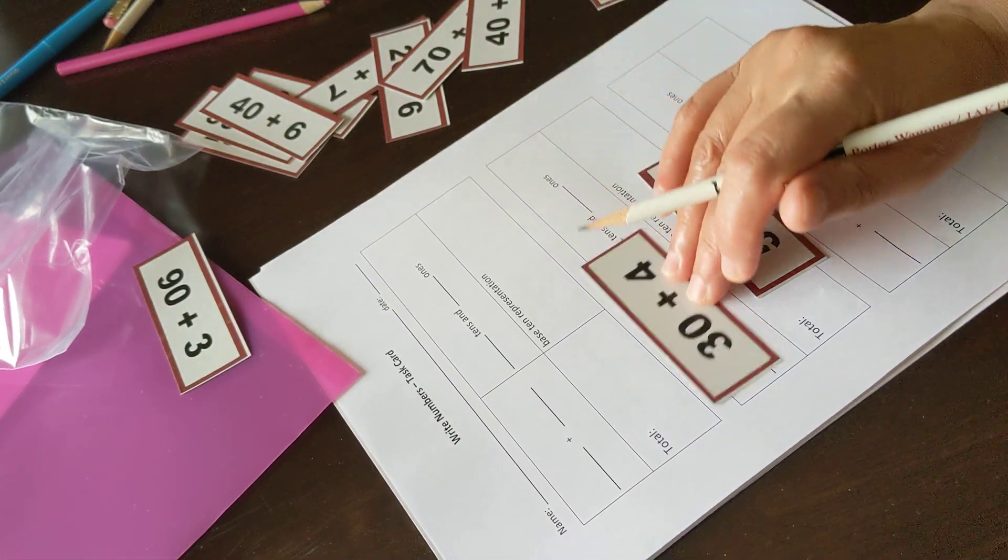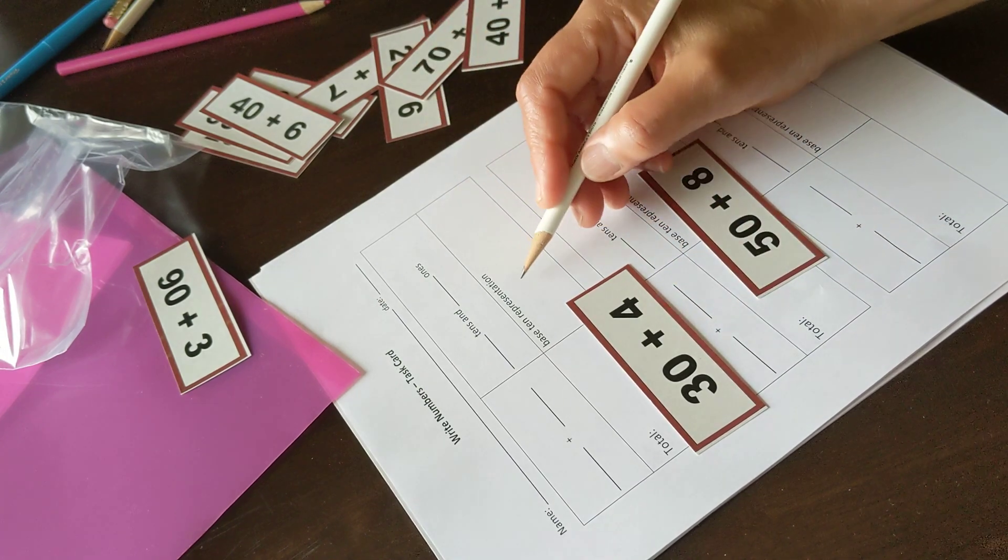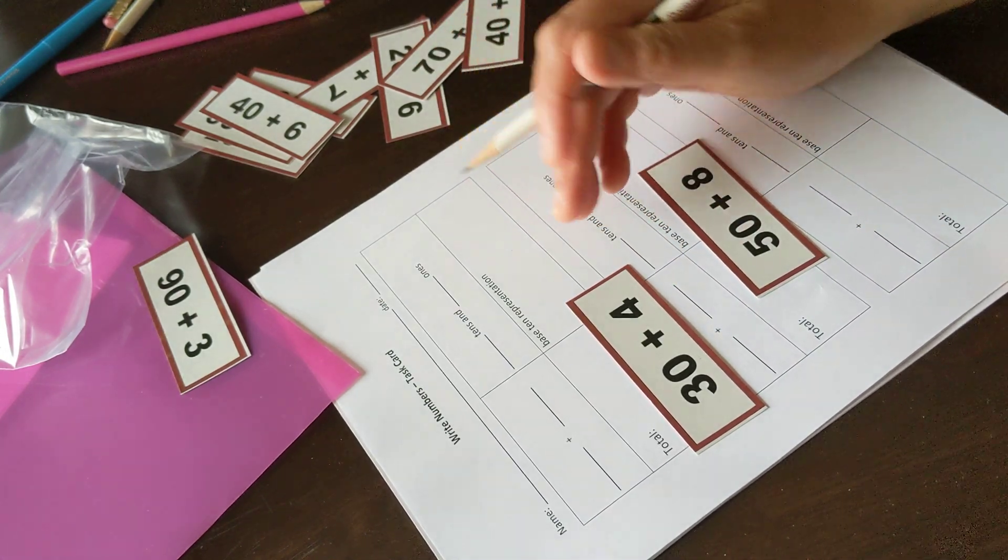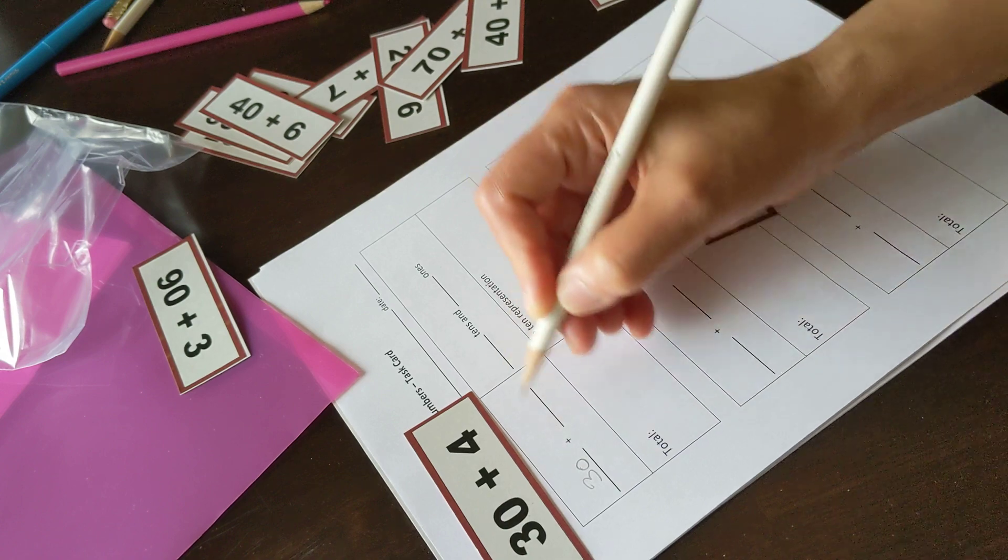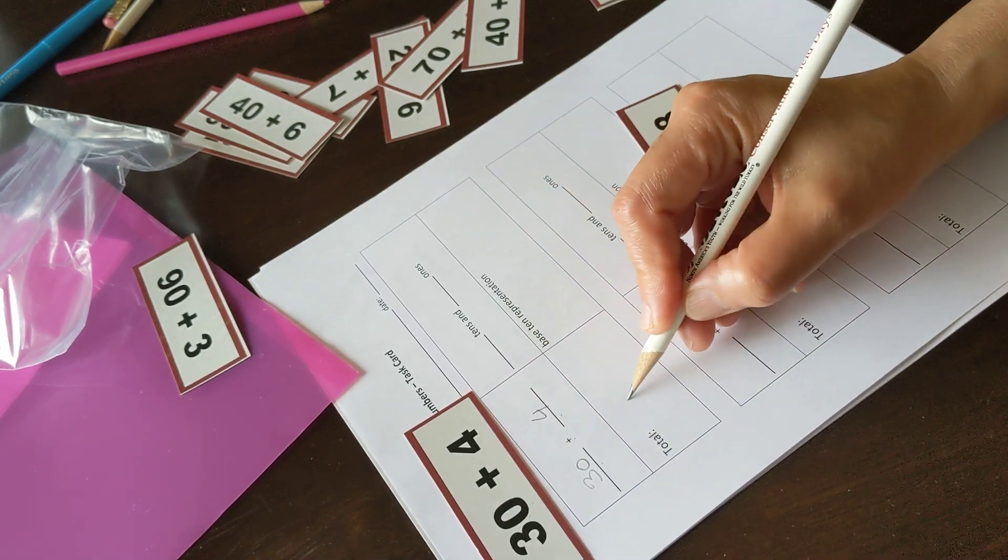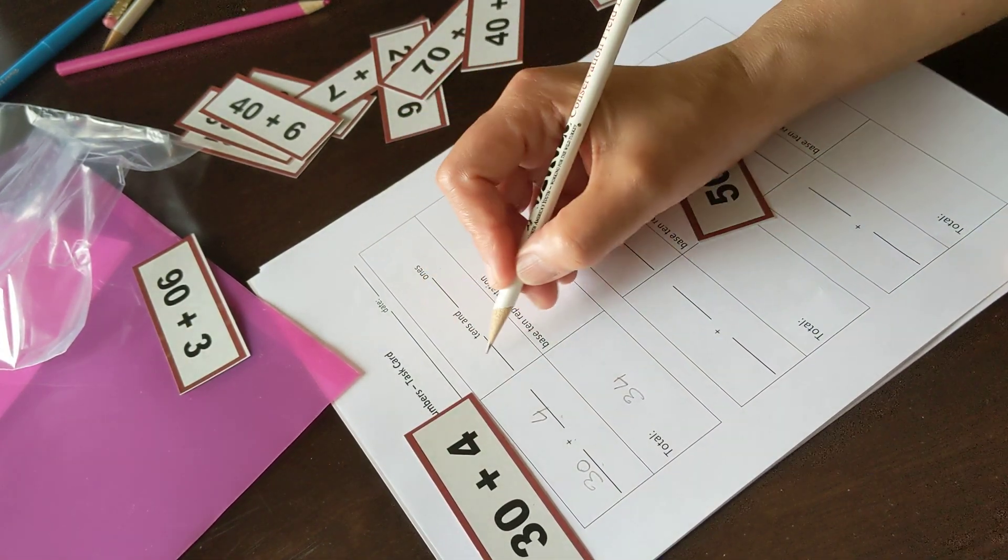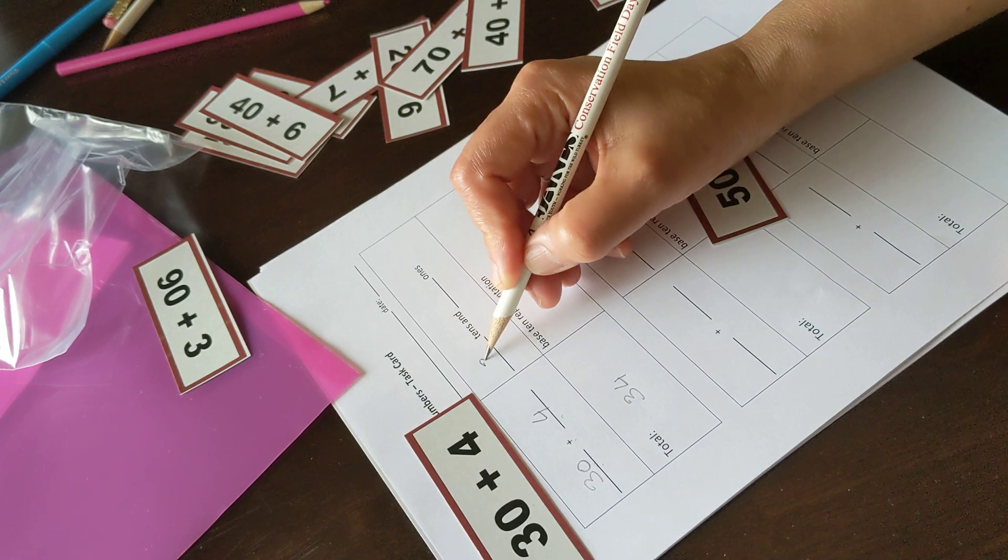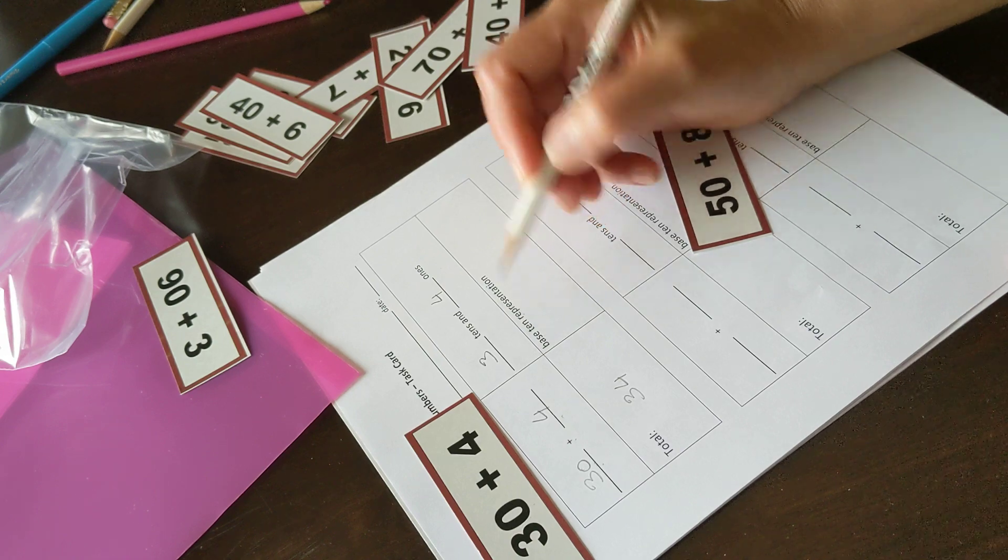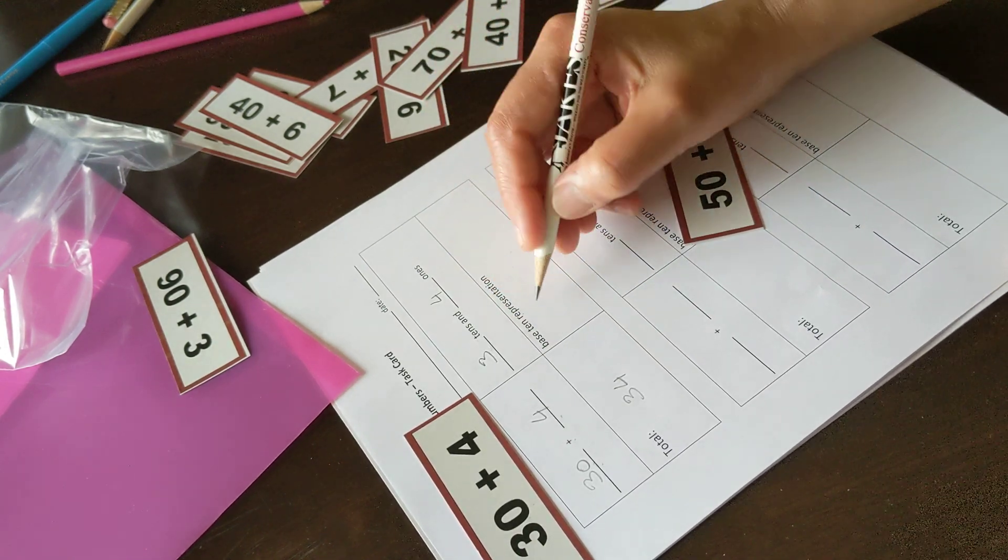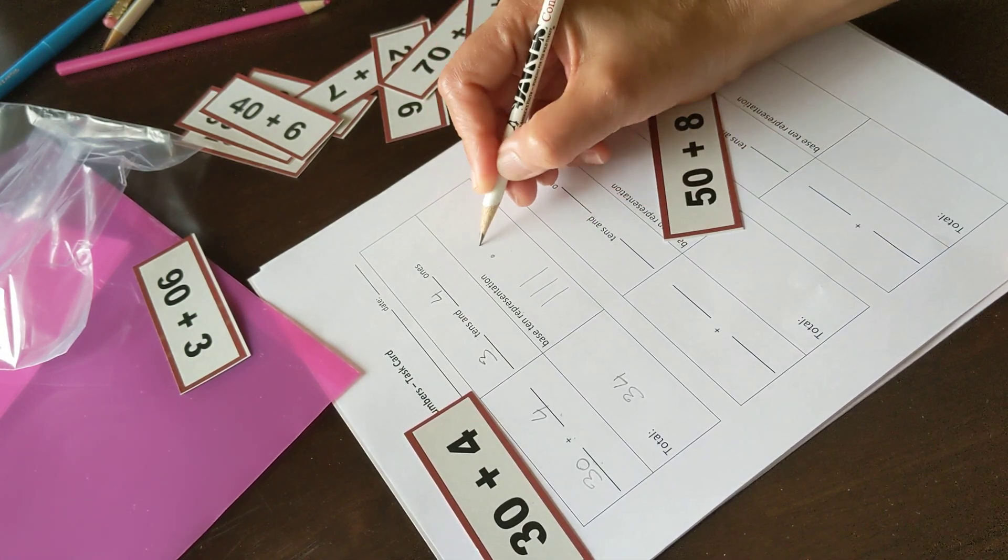In this activity, students explain expanded form and show their understanding using base 10 representation. Let's take 30 plus 4. I write 30 plus 4. Here is 34. 34 has 3 tens and 4 ones. If I have to show that in base 10 representation, I draw 3 ten longs and 4 units.